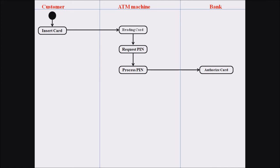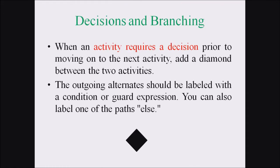Next is the decision or branching notation. When an activity requires a decision prior to moving to the next activity, add a diamond between the two activities. The outgoing alternatives should be labeled with a condition or guard expression. We can also use an if-else label. The splitting of a process into two paths is represented with a diamond symbol.